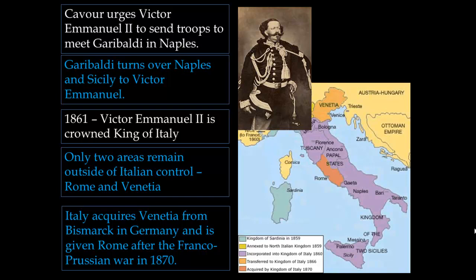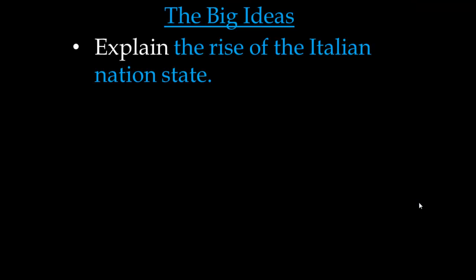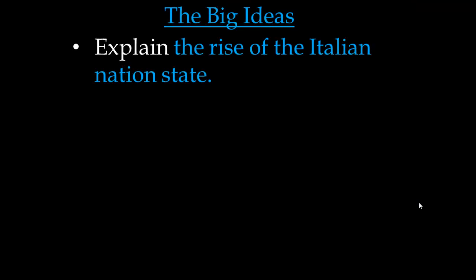This is very similar to the unification of Germany, though we could broadly say the unification of Germany was driven by one man, Otto von Bismarck, whereas it took several different revolutionaries to push for Italian unification. Let's review the big ideas: the rise of the Italian nation-state, the leaders of the Italian Revolution — the two Giuseppes, Mazzini, Garibaldi, and Cavour — and the causes and consequences of major political revolutions.